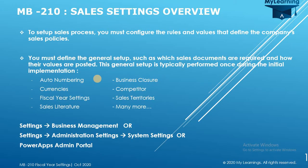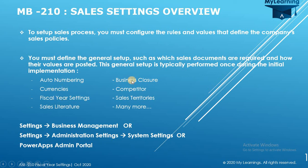These sales settings and this general setup can be called master entities, which support the transactional entities. Transactional entities include lead, opportunity, quote, order, and invoice — and these settings serve as master entities for them. I am going to cover seven of these settings in this module, and you will find a detailed description of how to apply and configure these settings in the sales process.